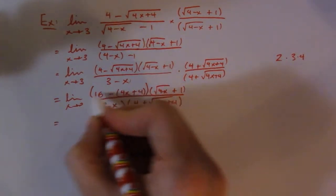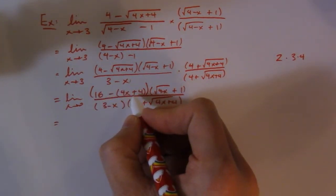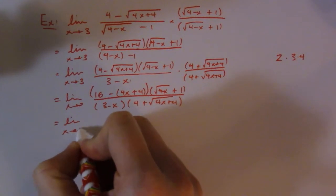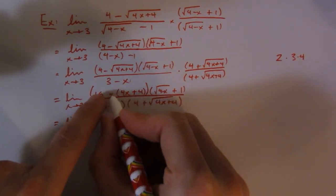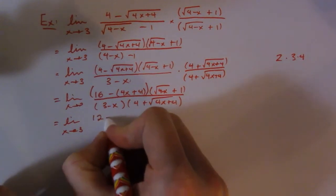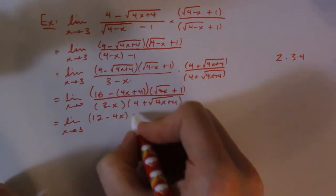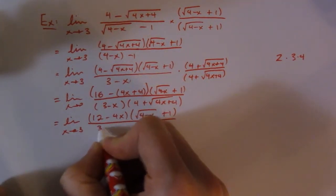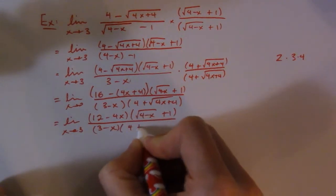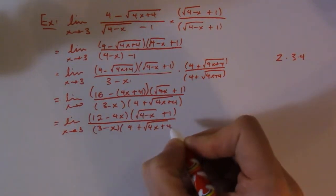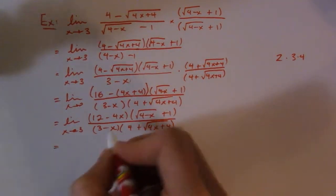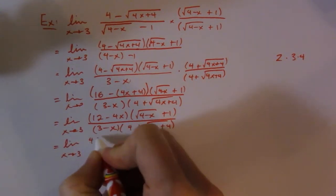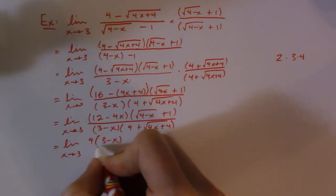So I'm going to simplify inside the brackets here. And I'm hoping I'm going to get something that I can either factor and it's going to be this guy. So let's see. So the limit as x goes to 3. So I get 16 minus 4 is 12. So I get 12 minus 4x in brackets. And then square root of 4 minus x plus 1. All over 3 minus x. And 4 plus root of 4x plus 4. So you can see that this guy factors. I can take a 4 out. So 4 comes out. And I got 3 minus x. There it is right there. So once you get that part, you're in business.